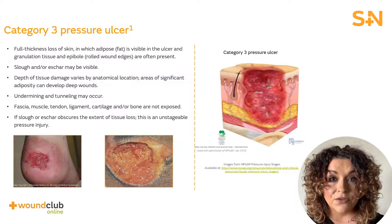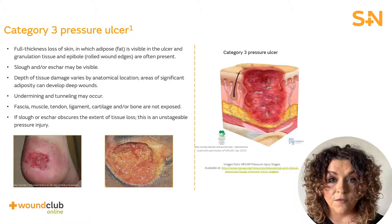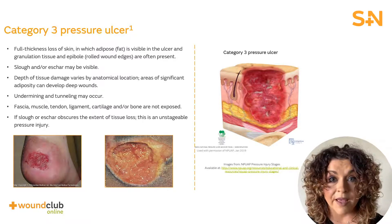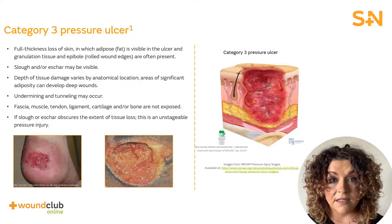Category 3 pressure ulcers are defined as those with full thickness skin loss. Adipose or fatty tissue is visible, often with the presence of granulation, slough and or eschar in the wound bed. There may be a presence of undermining or tunneling. However, muscle, tendon and bone will not be exposed.